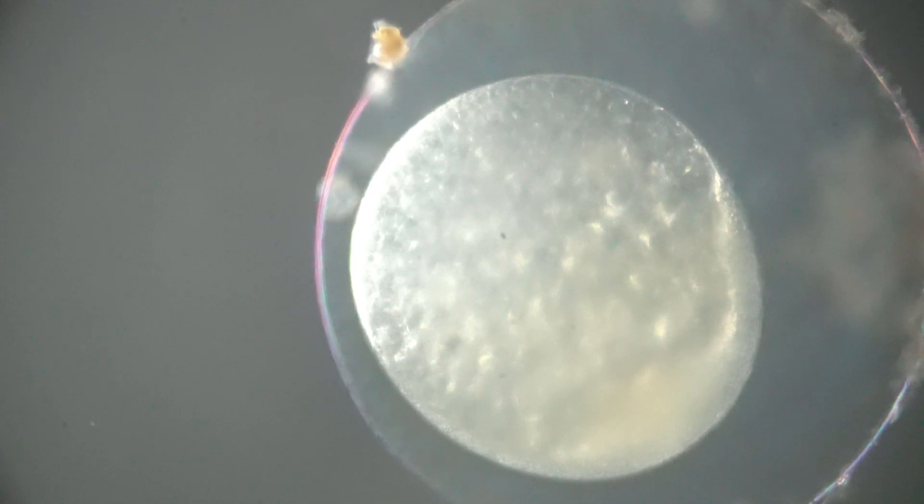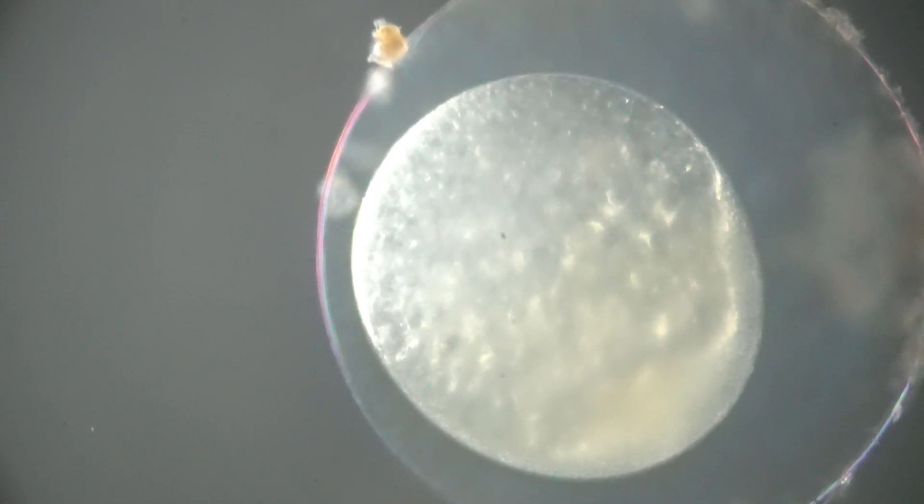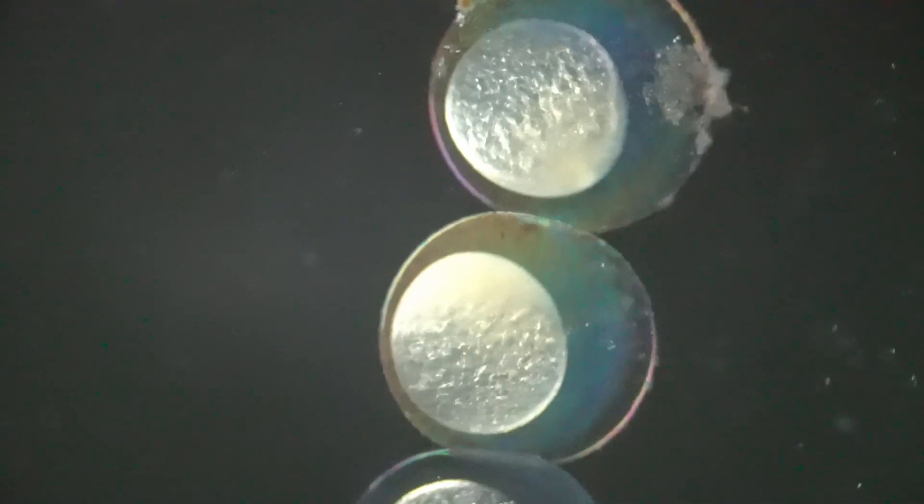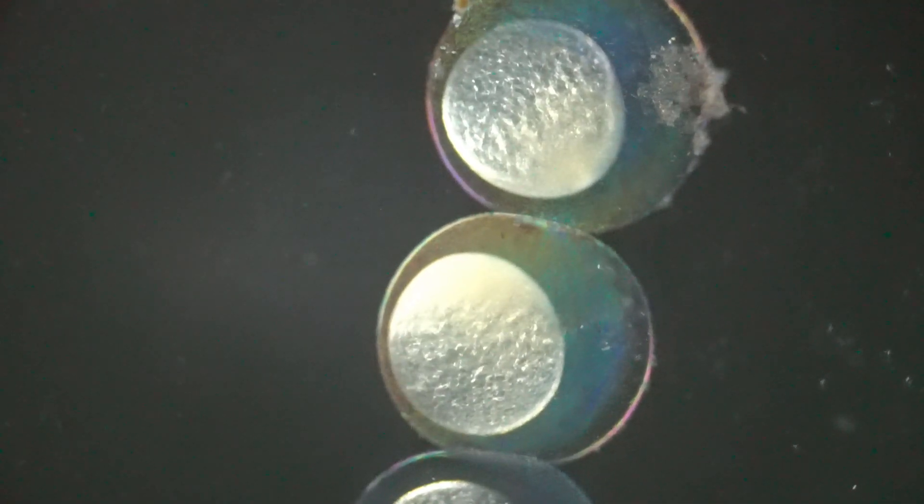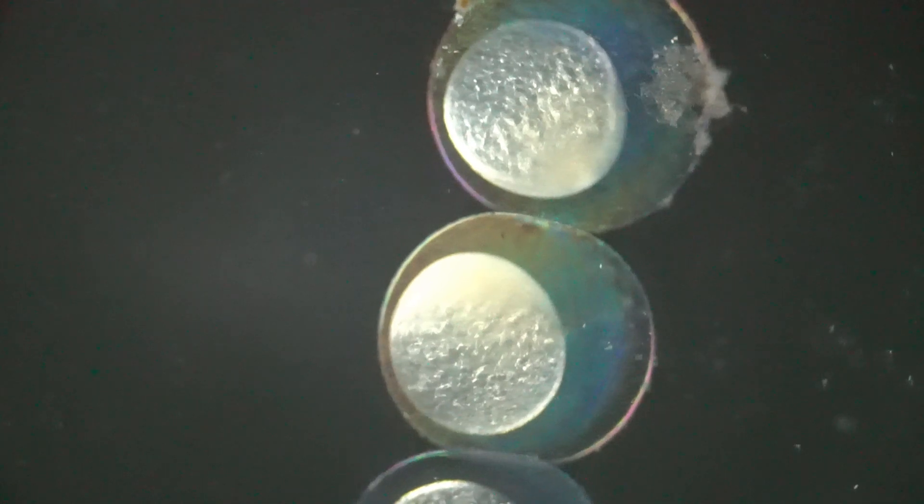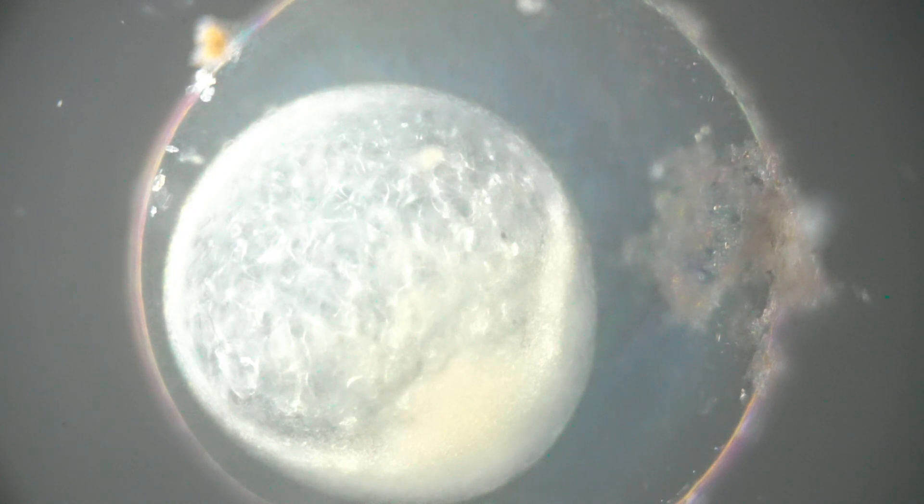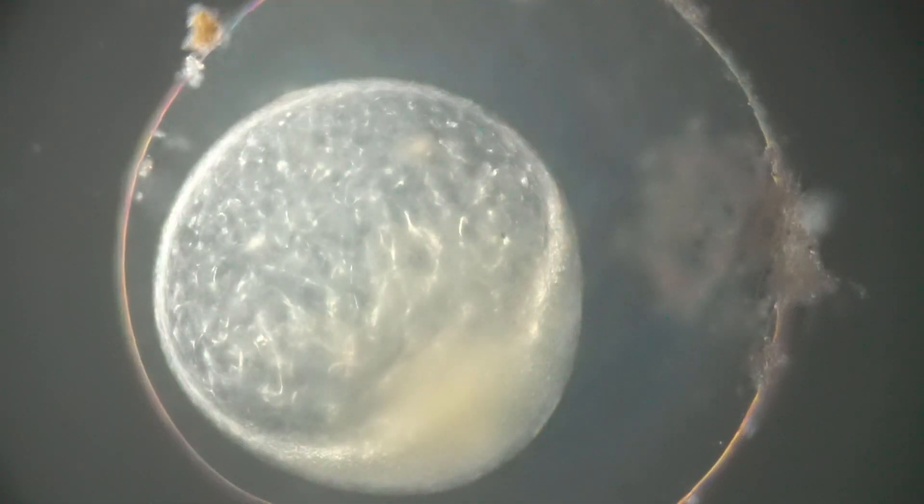You can see that the cytoplasma is starting to congregate on one side of the ovum. This is the beginnings of a zygote. As that cytoplasma starts to develop on that one side of the ovum, it starts to become what is known as a blastodisc.